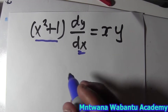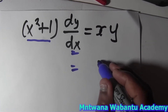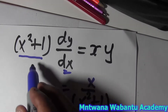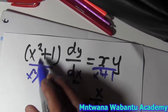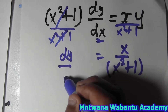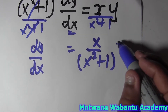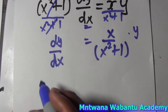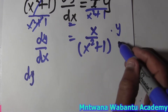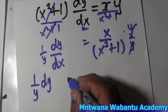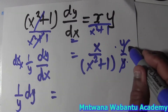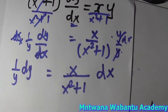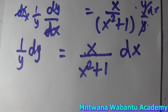Now let's look at the second example. Separating the variable means x with x and y with y. You see the x terms go together. If we divide throughout by (x² + 1), this and this cancel, so on the left we have dy/dx and on the right we have xy divided by (x² + 1). Then we divide both sides by y, so we're left with 1/y on the left, and x/(x² + 1) dx on the right.